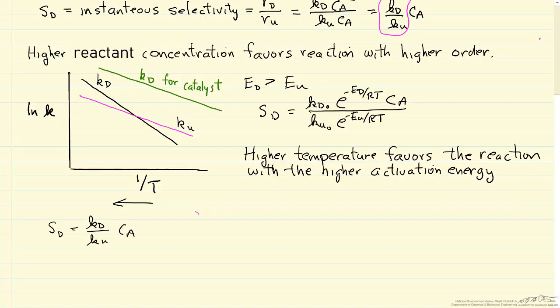I've written down the instantaneous selectivity again, and if we want to keep the reactant concentration high as long as possible, then a plug flow reactor or a batch reactor will do that. The plug flow and batch have quite similar behavior. We start out at the highest reactant concentration,